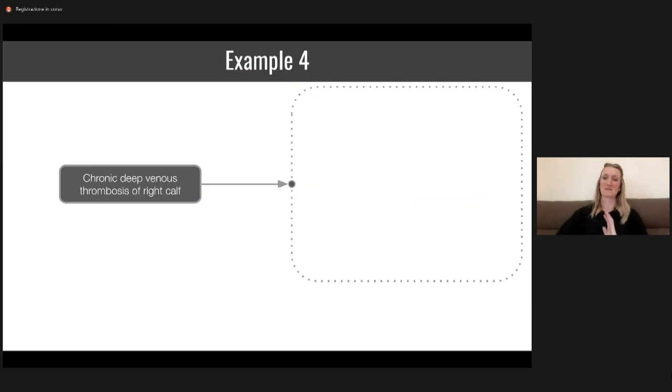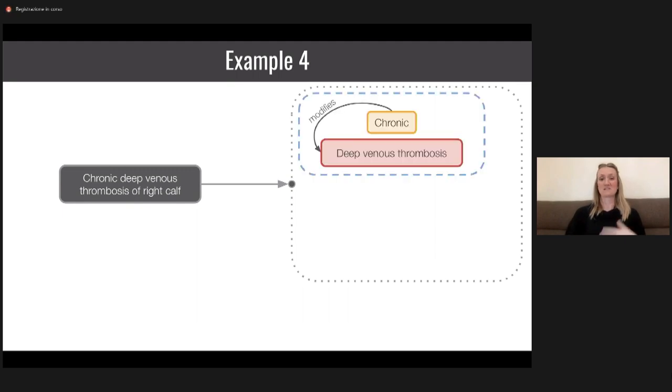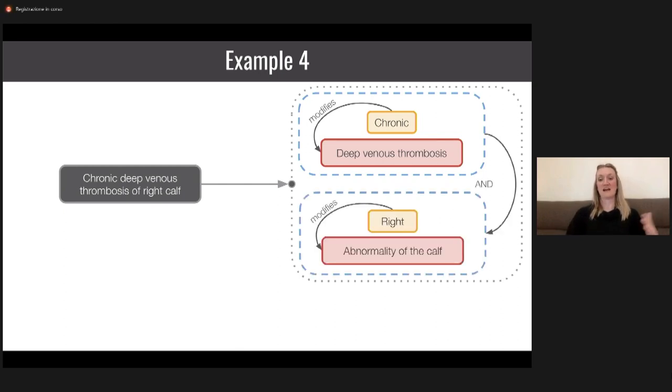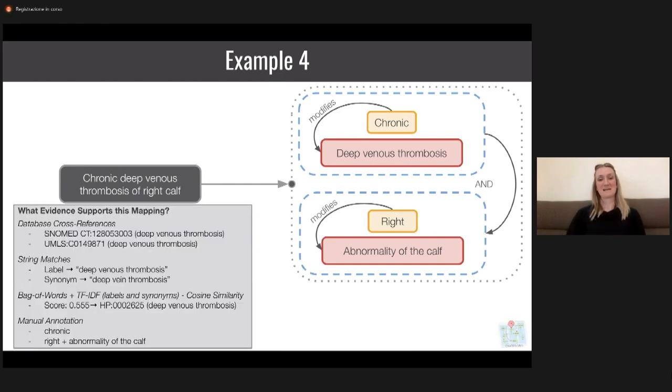Last two examples, and I promise I'm handing it back to Nico. Chronic deep venous thrombosis of right calf. As you might expect, we're going to have chronic modifying deep venous thrombosis and right abnormality of the calf, in this case right modifying abnormality of the calf. Same exact types of evidence to support this. We just really want to impress upon you that when we are using this framework, we're not just saying trust us, we've mapped this as best we could. We're saying trust us, we've mapped this as best we could, but here's how we did it.